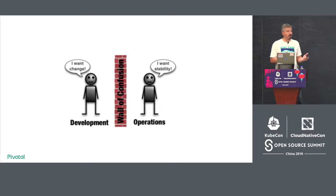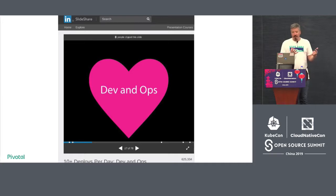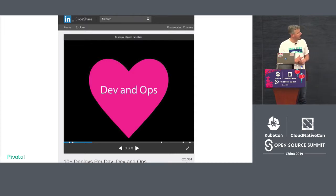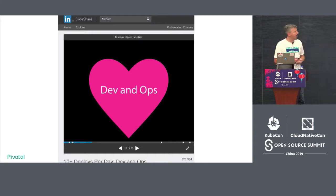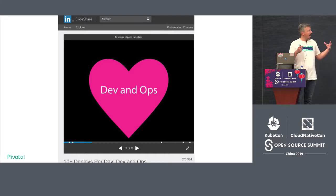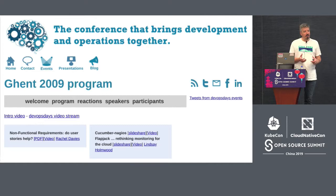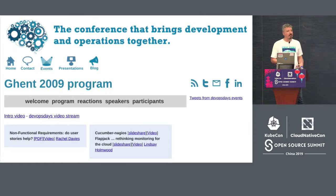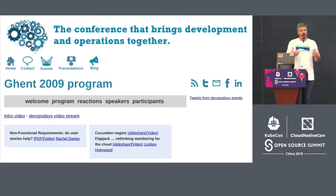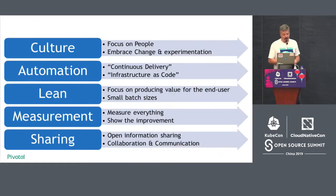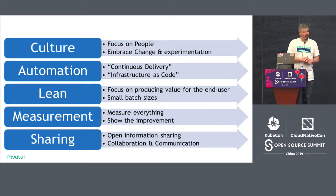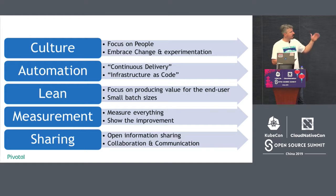Around 2010 we started thinking about approaching infrastructure and operations in an agile way. One of the first examples of DevOps type thinking came from John Allspaw and Paul Hammond at Flickr — they were talking about how they did 10-plus deploys per day by having dev and ops working tightly together and removing that wall of confusion. In 2009 we had our first DevOps Days conference run by Patrick Dubois. We've been doing DevOps now for about 10 years and have pretty good ideas about how to pull down those silos.